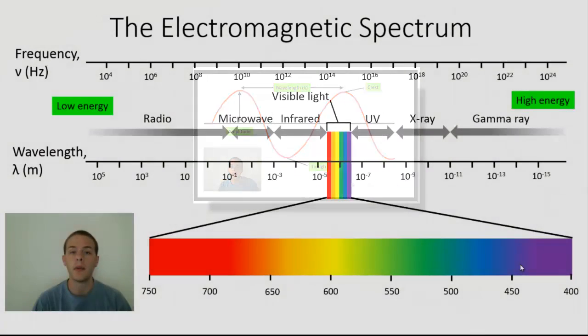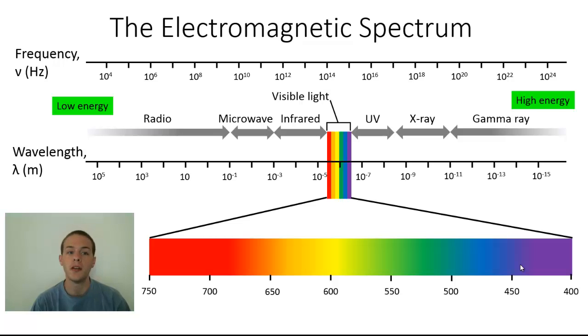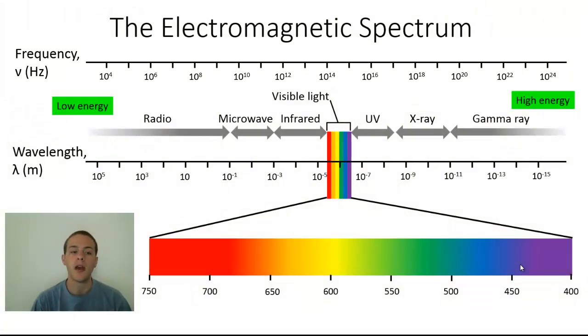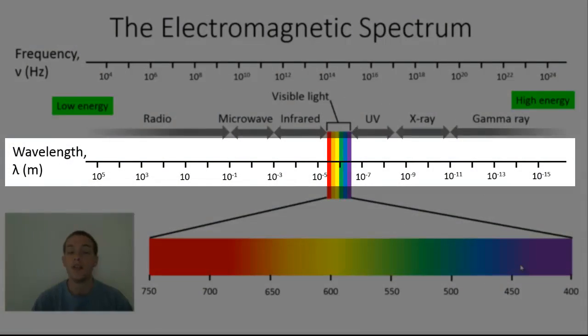On this diagram here there are two scales: a frequency scale measured in Hertz ranging from 10^4 Hz all the way to 10^24 Hz, and a wavelength scale measured in meters ranging from 10^5 meters all the way to 10^-15 meters.